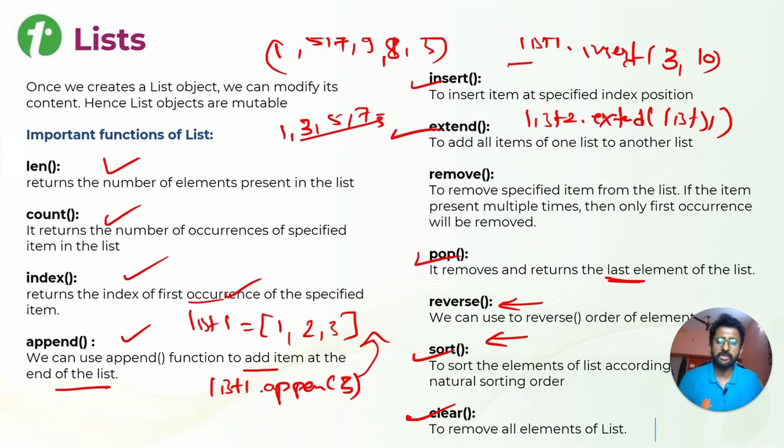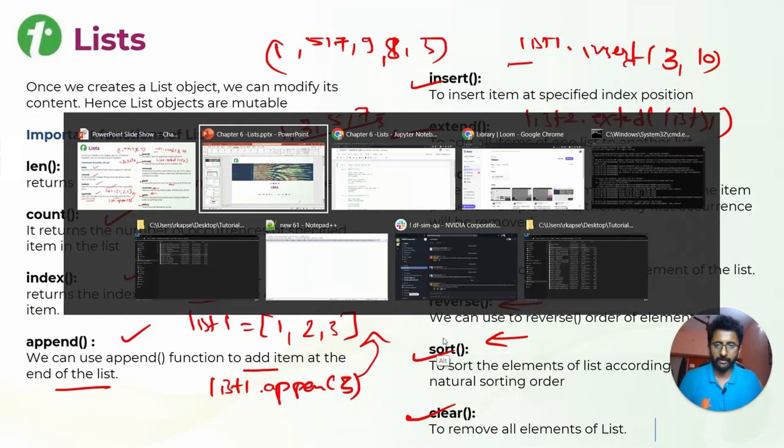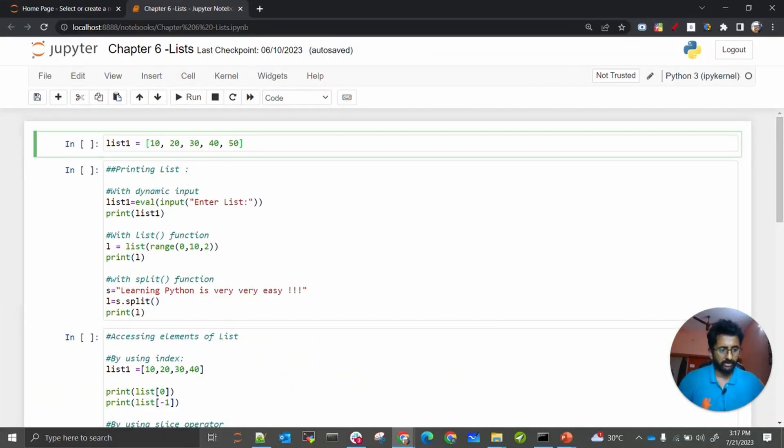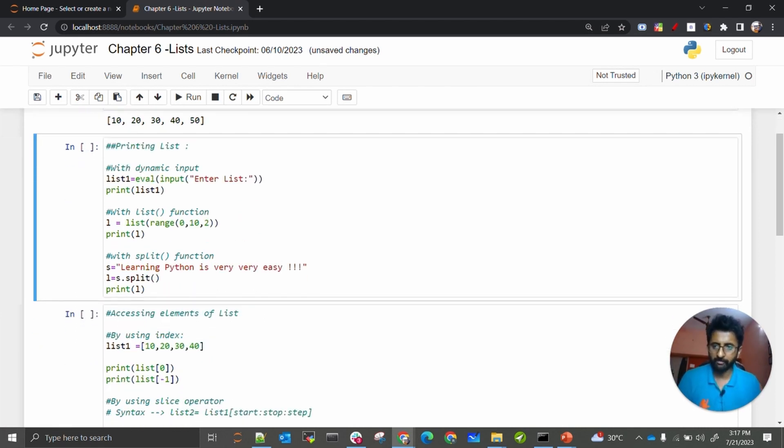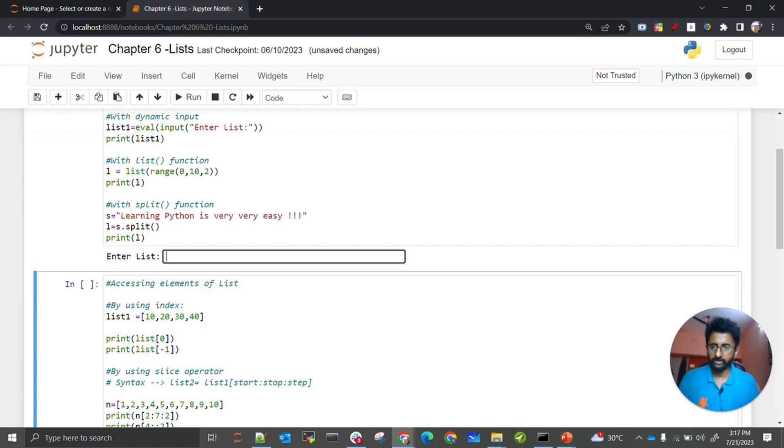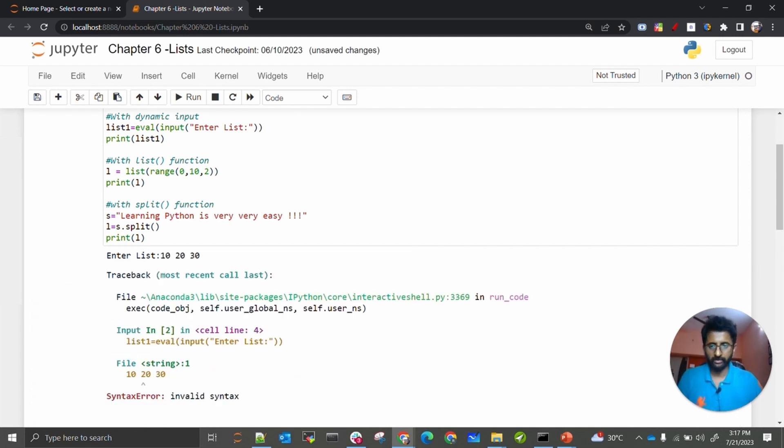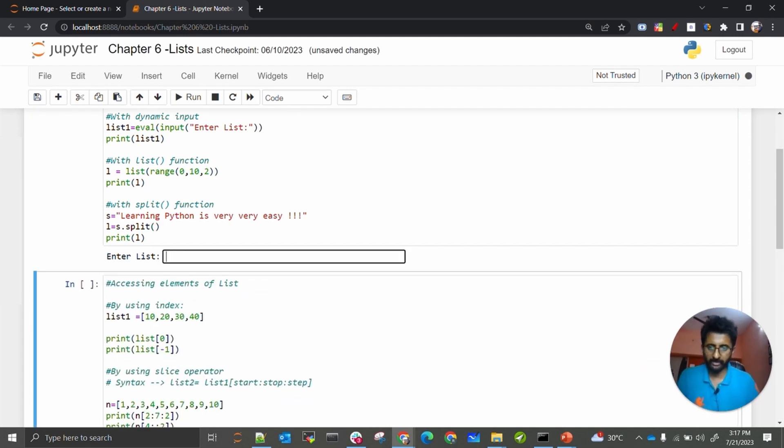So that is it from the list. We'll see it in Jupyter Notebook. Here, the example is I have created list1 and stored all those values, and then I am printing this list1. Now here I am just taking the input and then doing certain operations. Whatever the inputs I want to give should be comma-separated.